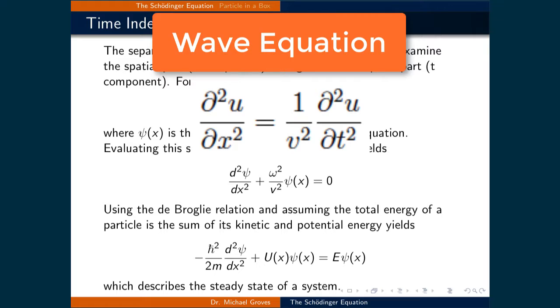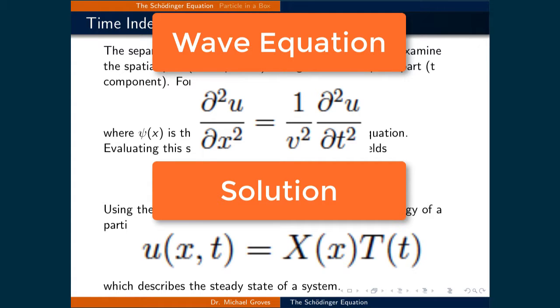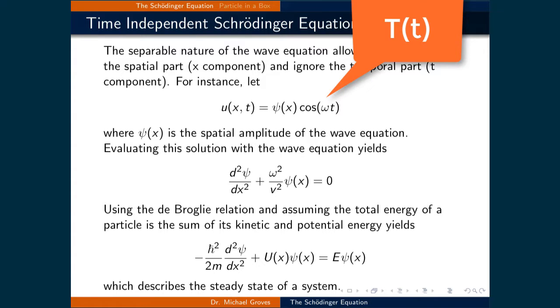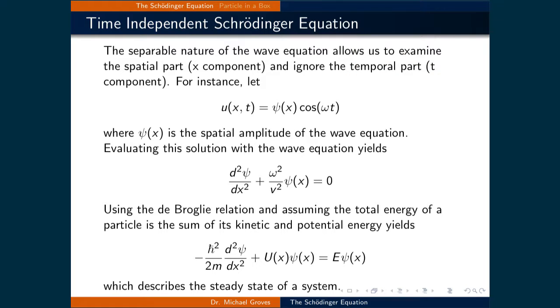Think back to the activity where we examined solutions to the wave equation. To solve the wave equation, we used a solution where u(x,t) = X(x)T(t), meaning that it was a function totally of position times a function totally of time. The separable nature of the wave equation allows us to examine the spatial part, being the x part, and ignore the temporal part, being the t component.